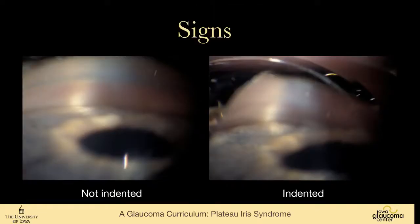Here we see a photograph on the left — it's not indented. On the right, we're indenting. We can see this fullness in the far periphery. A few video clips of indentation gonioscopy: you can see as we push in here, this roll in the far periphery, very classic for plateau iris.